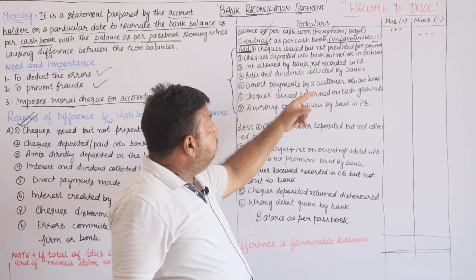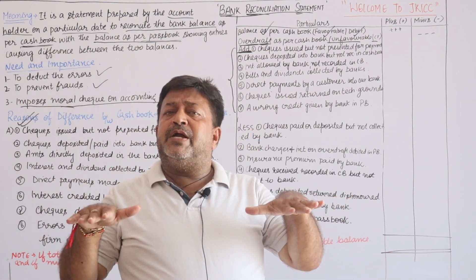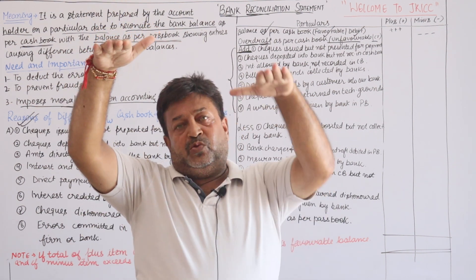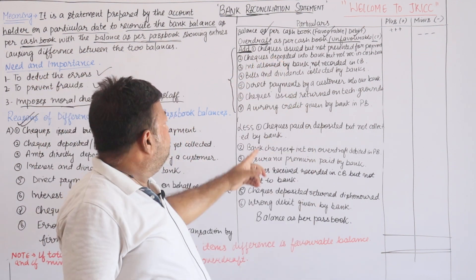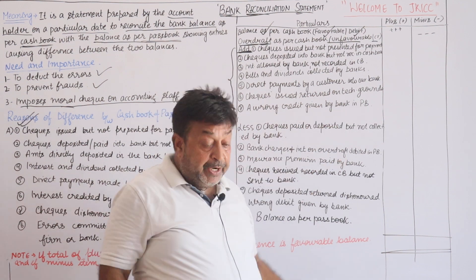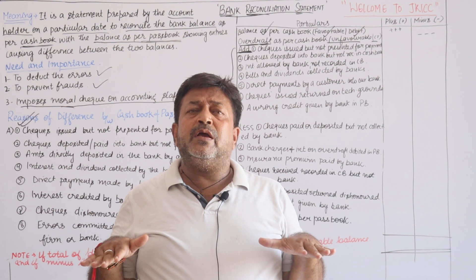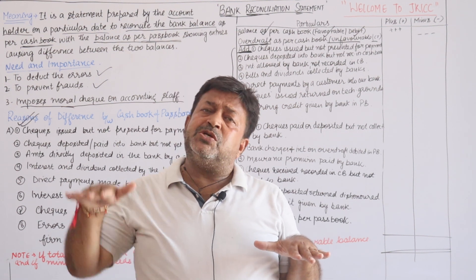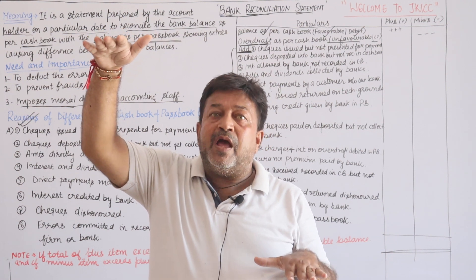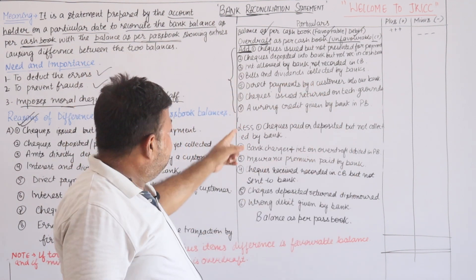Fourth addition item: bills and dividends collected by bank — the bank collected my dividends and bills, pass book balance increased, so I will add. Fifth: direct payments by customer into bank — some customers from foreign states saved money directly into my account, so pass book balance increased but I don't know about it. When I see the pass book, the balance has increased and I haven't recorded it in the cash book, so I must add it.